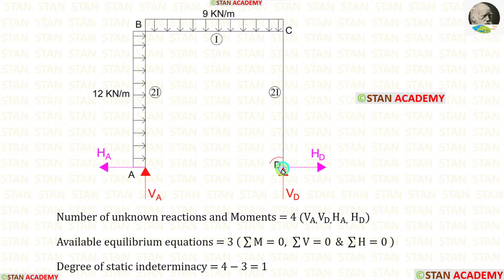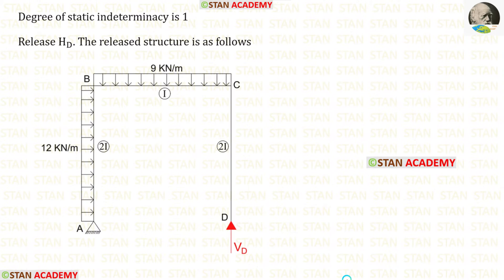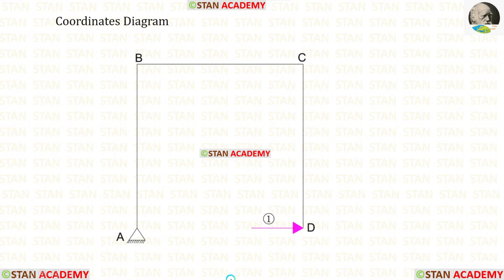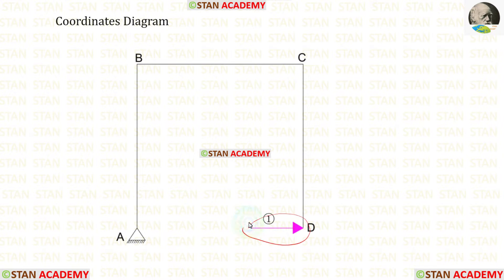In this frame, at point D, let us remove the horizontal reaction HD. This figure is called the released structure. Now let us make the coordinates diagram. In this analysis there is only one coordinate, which is HD. Let us assume that HD is acting towards the right side.